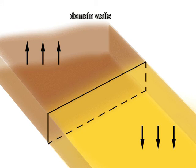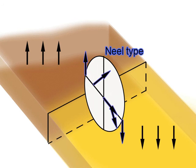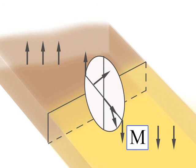To put it simply, we deal with Neel-type domain walls, where magnetization rotates in the plane perpendicular to the domain wall.